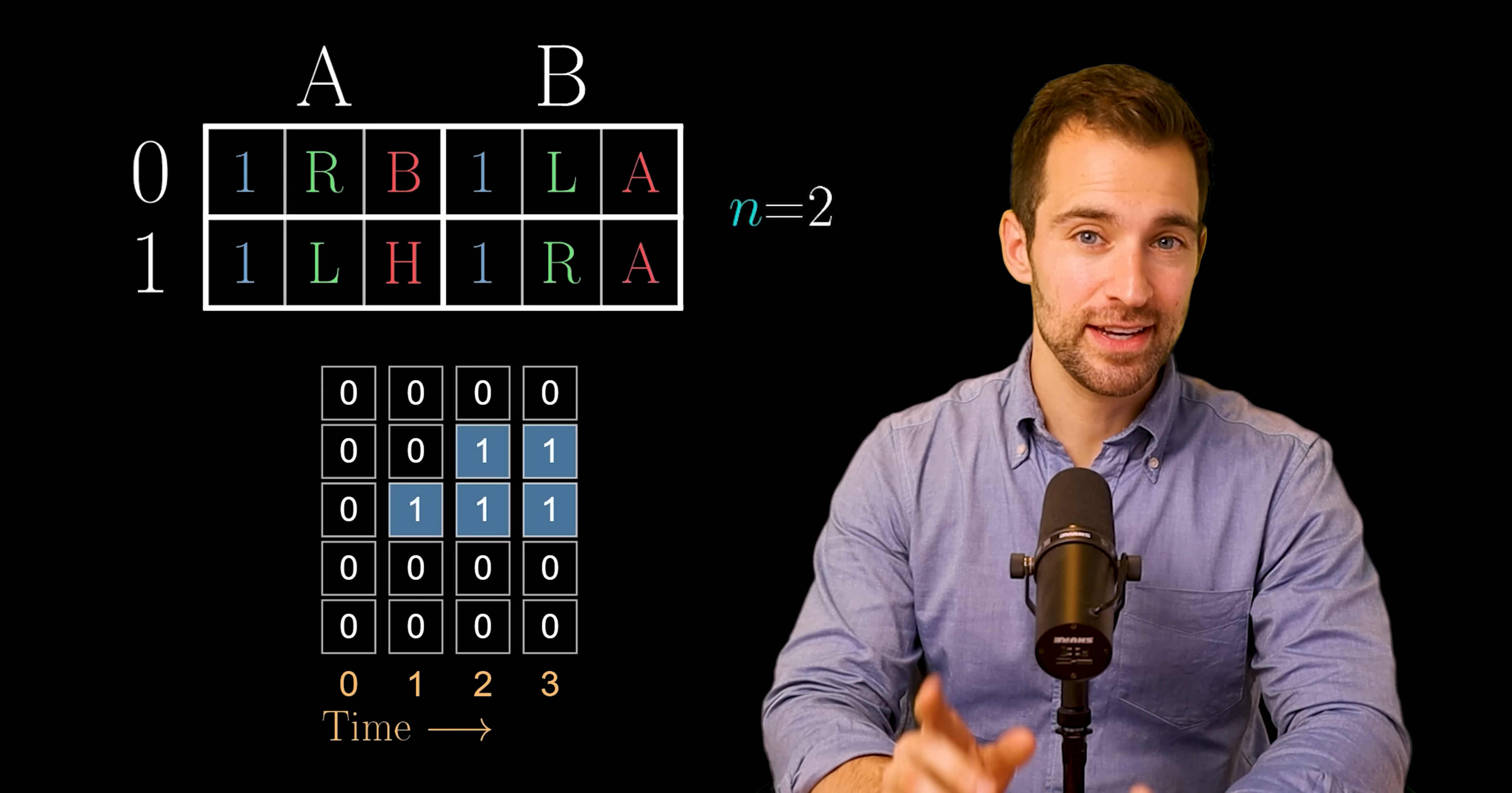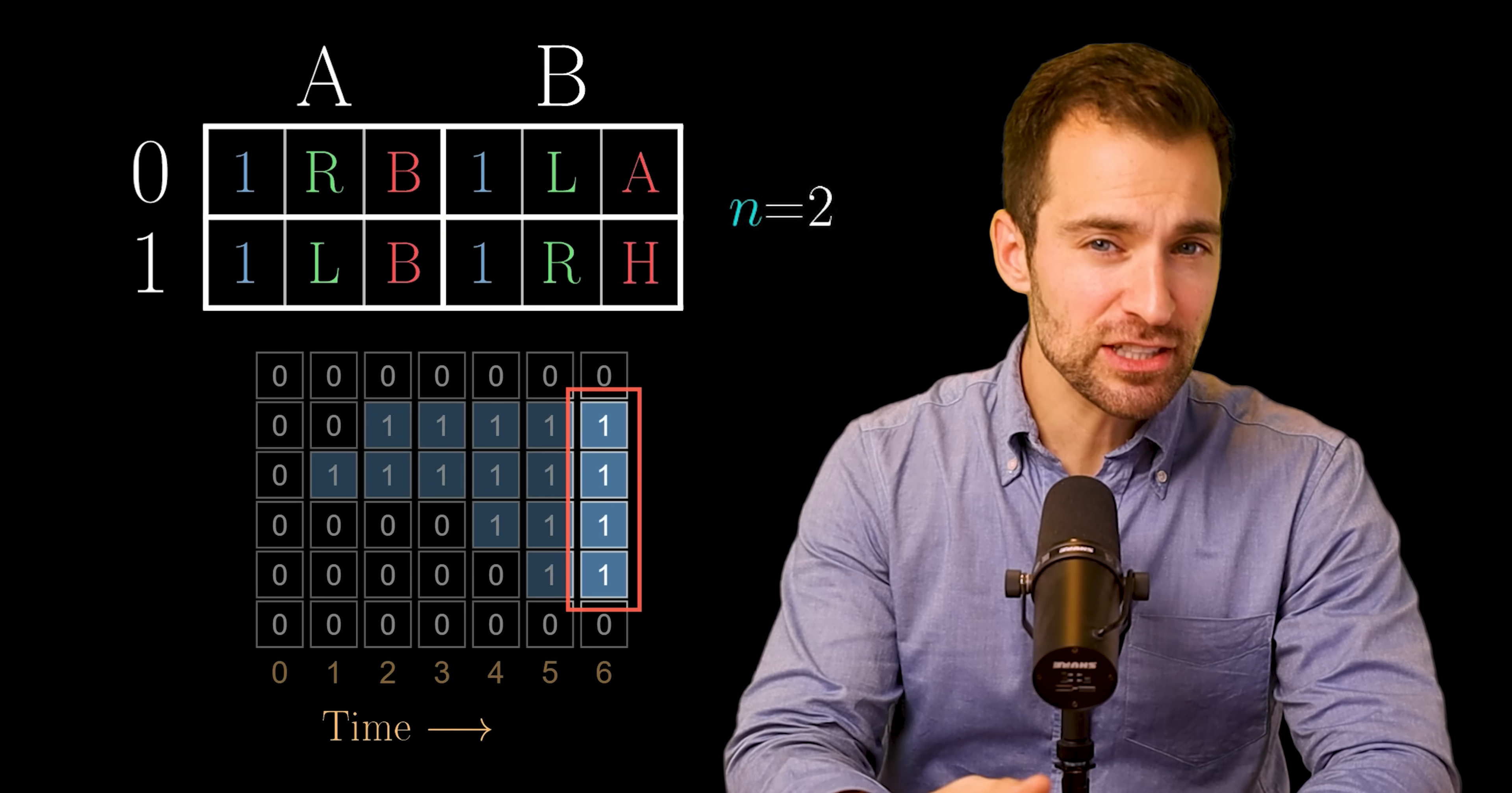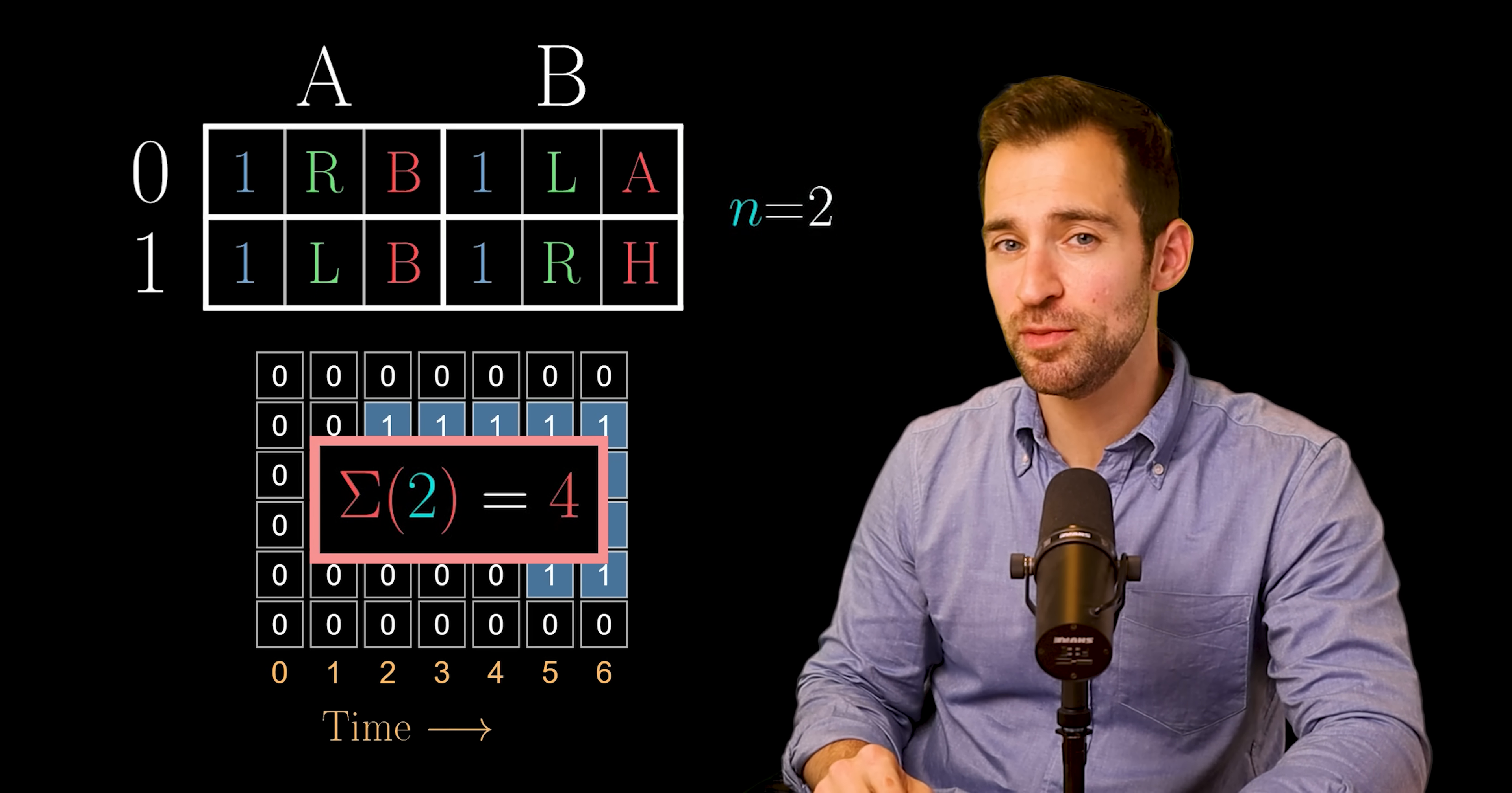But could we have written more? Yes. It turns out if we used this Turing machine, we would have gotten this tape history, which produced four ones. And this turns out to be the most possible. So, sigma two is four. Because this machine achieved the max amount of ones, it's a BusyBeaver machine.